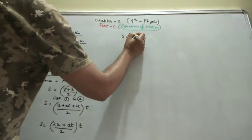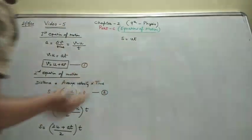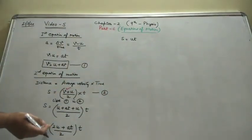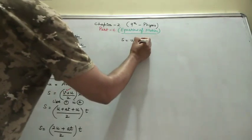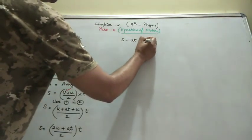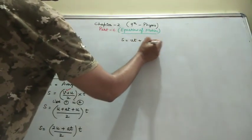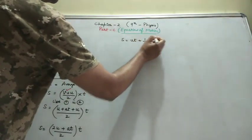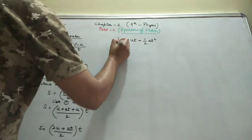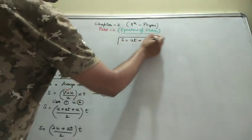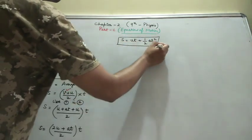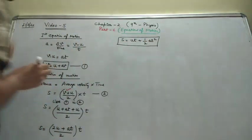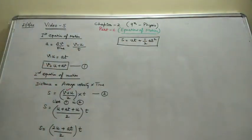This simplifies to s is equal to UT plus half aT squared. This is our second equation of motion.